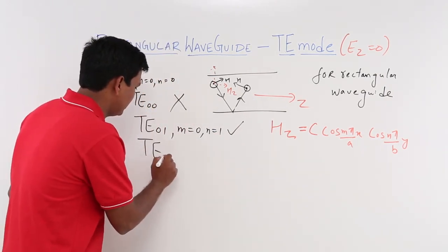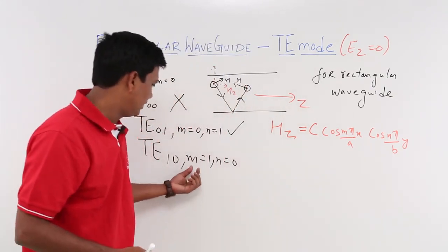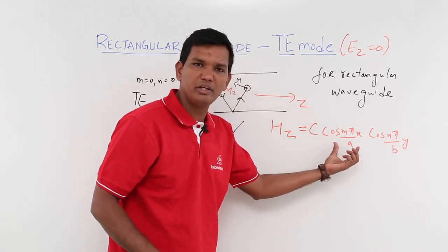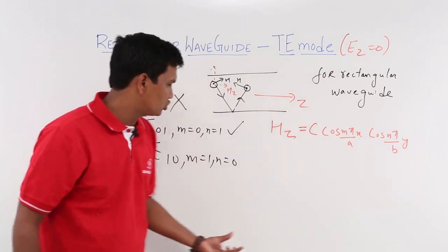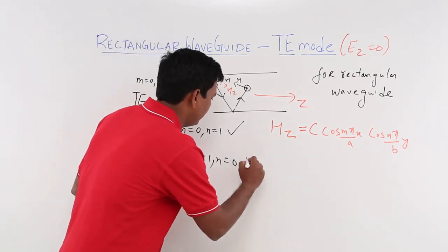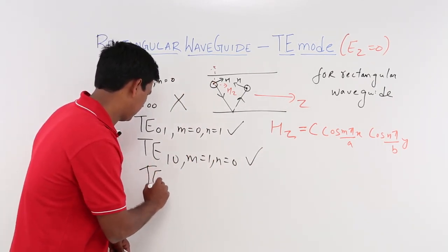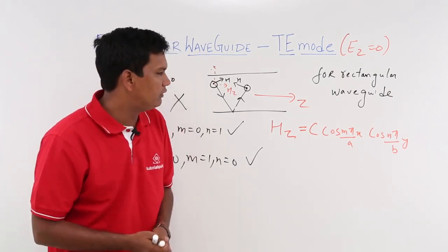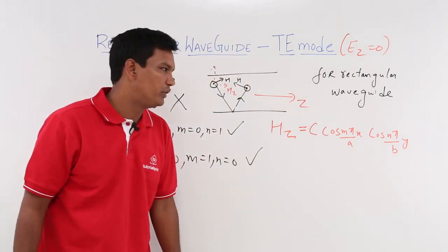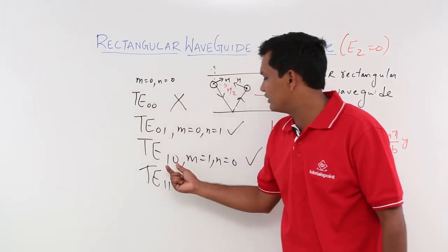What about TE(1,0), where m equal to 1 and n equal to 0? With n equal to 0, cos(0) becomes 1, and the remaining cosine term makes Hz harmonic in nature. So again, if Hz is harmonic, it will produce an electric field. Therefore TE(1,0) will also exist. What about TE(1,1)? Substituting m=1 and n=1, we get cos(A)·cos(B), which is also harmonic, so TE(1,1) will also exist.